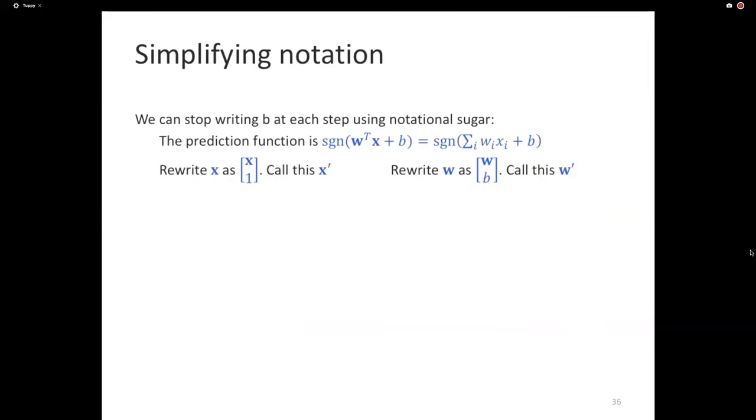You always have to carry these two things around to define the linear classifier. And while mathematically this is complete and this is all we need, when we are writing code, it's often possible that you might end up forgetting to add the b. Or it's possible that you might subtract the b instead of adding the b in one place and all that. So here's a rotational trick that allows you to stop writing the b at every step. So the prediction function is sum over w_i x_i plus b, which is the same as the sign of w transpose x plus b. Remember that x is a vector which has multiple dimensions. Let's say we have d dimensions. Each of these is a real number. And w is another d-dimensional vector.